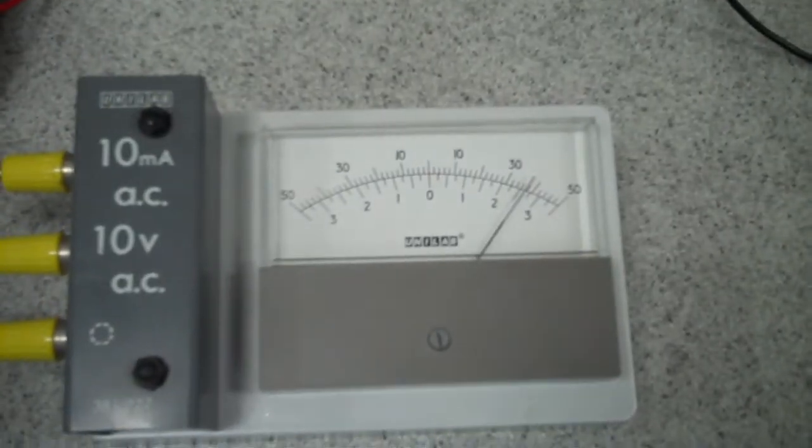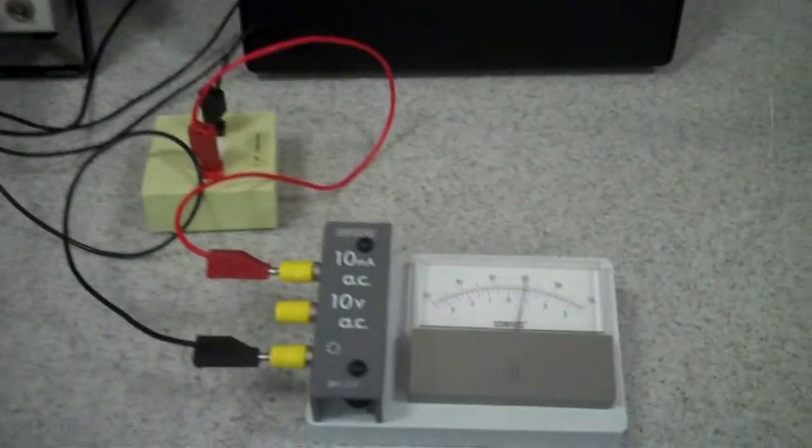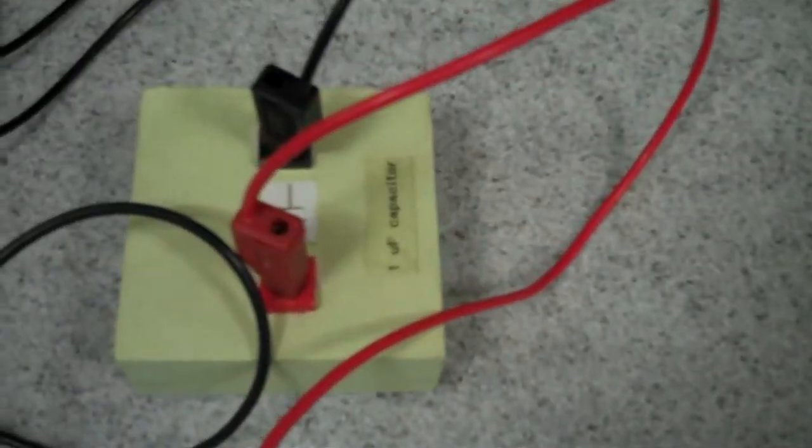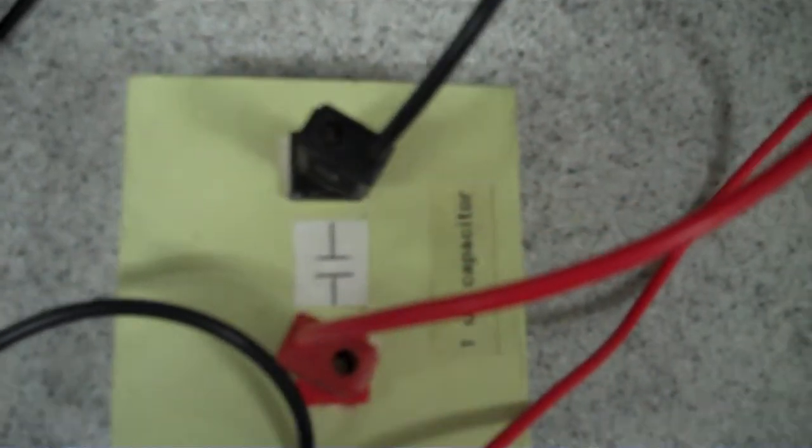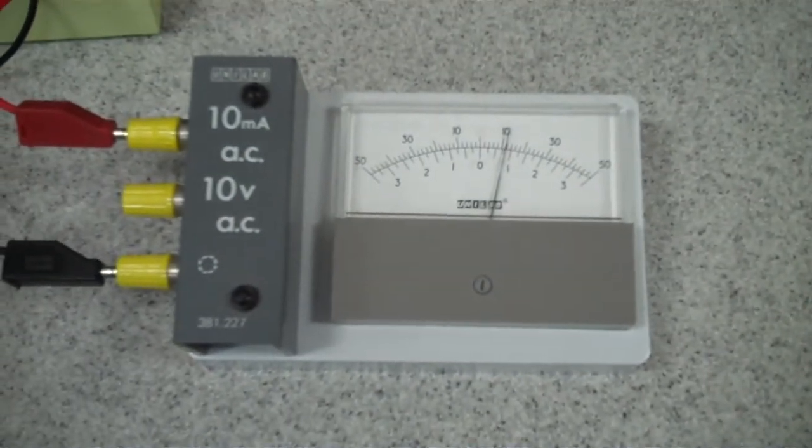A resistor here, an AC ammeter, and how the frequency affects the current in a capacitor circuit, a wee capacitor here, and an AC ammeter.